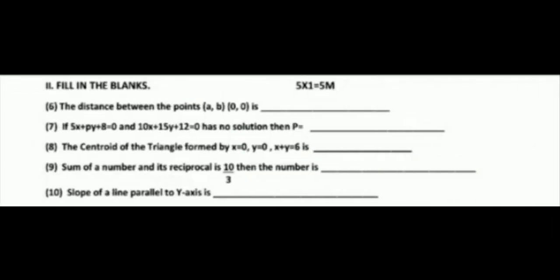Section 2: fill in the blanks. Five questions, five marks. The distance between the points (A, B) and (0, 0). Distance formula is under root of x2 minus x1 square plus y2 minus y1 square. Answer: under root of A square plus B square.